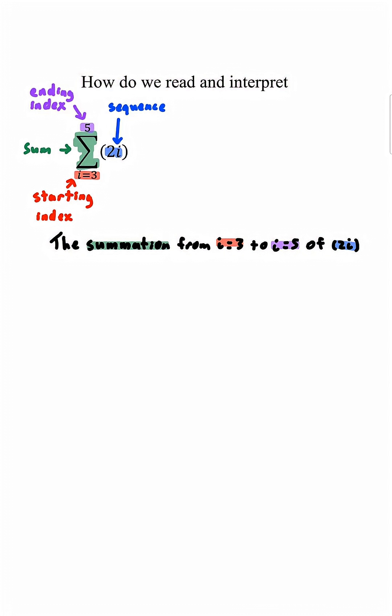So how do we interpret this? Since our starting index is i equals 3 and our sequence is 2i, then we have 2 times 3. This is our first term. Our next term is i equals 4, so 2 times 4. And the next term is i equals 5, so 2 times 5. Since our ending index is 5, then we'll stop at i equals 5.